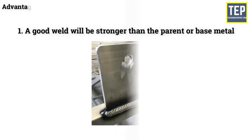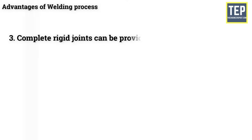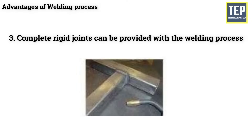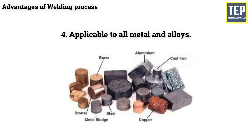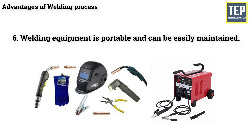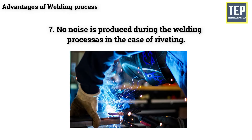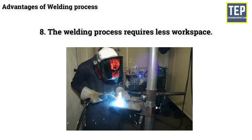The advantages of the welding process include: a good weld will be stronger than the parent or base metal; welding is a faster process compared to riveting and casting; complete rigid joints can be provided; it is applicable to all metals and alloys; difficult shapes can be produced; welding equipment is portable and easily maintained; no noise is produced during welding as in riveting; it requires less workspace; and any shape of joint can be made with ease.